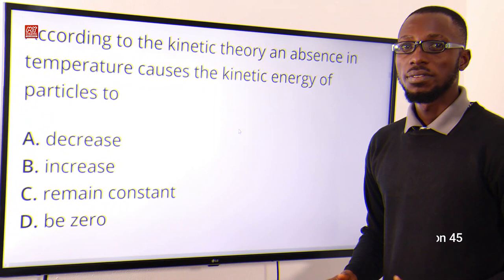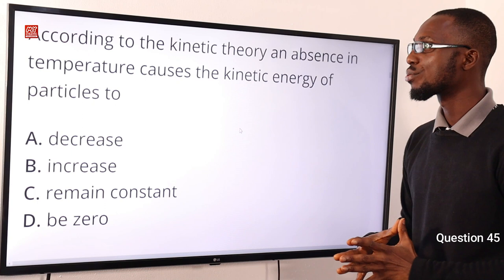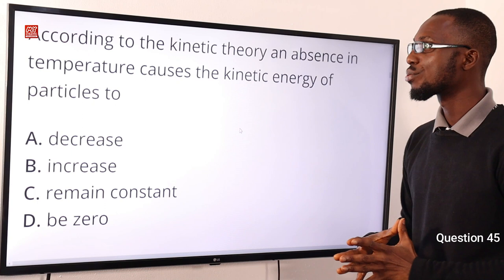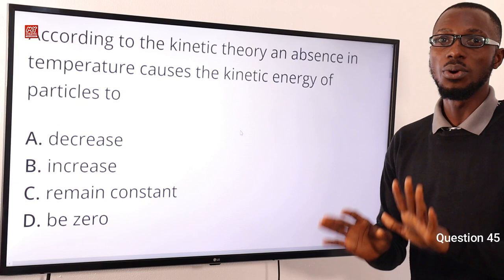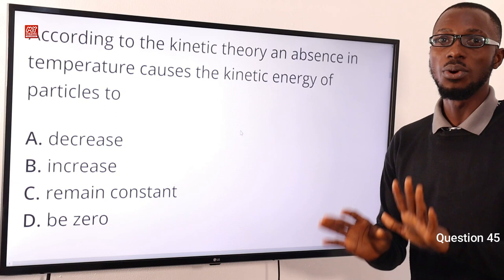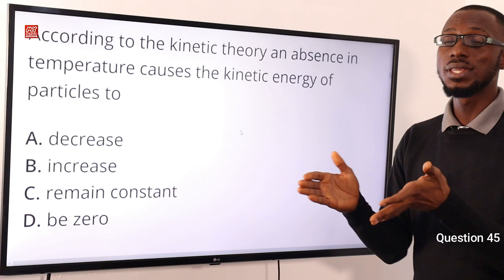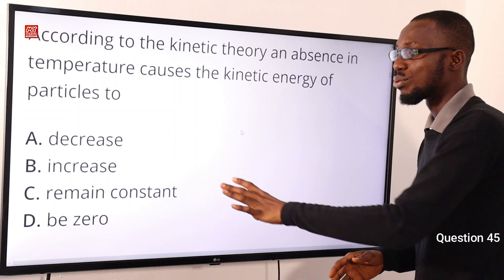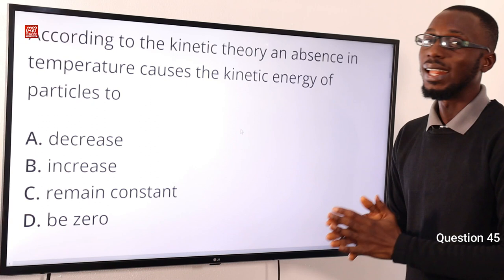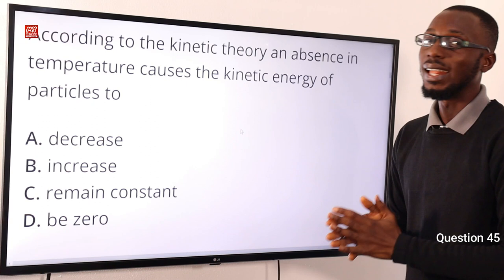Number 45: According to the kinetic theory, an absence in temperature — referring to absolute zero — causes the kinetic energy of particles to tend toward zero. At absolute zero, which is minus 273 degrees Celsius, the kinetic energy will be zero. The most viable option for this scenario is option D.